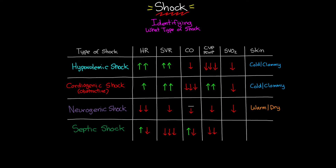With SvO2 in septic shock: early on we see a drop in SvO2 and can have a hypermetabolic state that profoundly lowers it. But as time goes on, cellular edema prevents oxygen from diffusing across the barrier, and SvO2 actually begins to rise — sometimes quite profoundly — as the body can no longer utilize available oxygen. Skin is initially warm or even hot and dry due to fever and inflammation, but eventually turns cold and clammy as the body attempts to vasoconstrict.